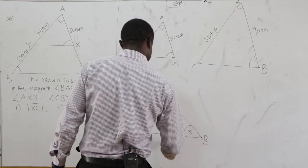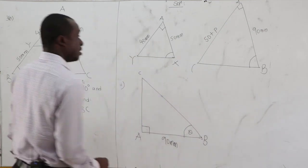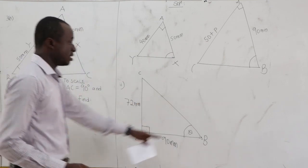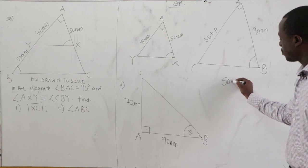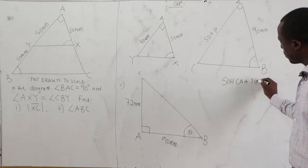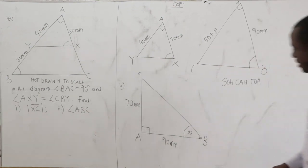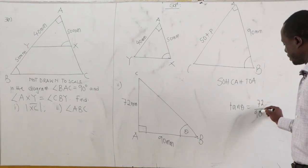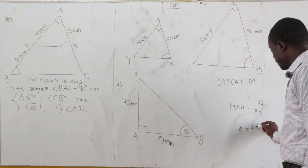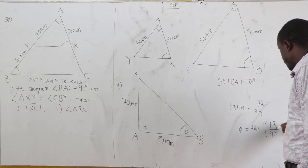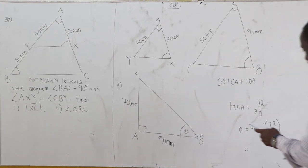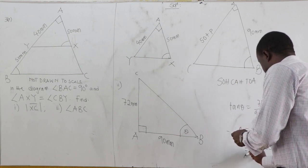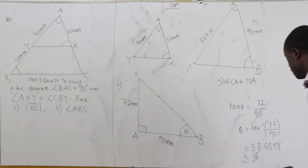AB is 90 mm. AC is 50 plus P, but P is 22, so AC is 72 mm. We have the opposite (72) and the adjacent (90), so we use tan. Tan(theta) equals 72 over 90, so theta equals tan inverse of 72 over 90, which gives 38.6598 — approximately 38.6 to one decimal place.